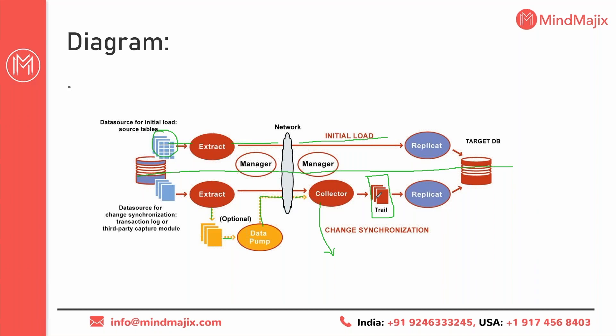The replicate process runs in the target and reads all data from the remote trail file, then applies the data to the target database. The trail files available at the source side are called local trail files, and the trail files at the target side are called remote trail files. Trail files are used to avoid data loss — even if the network goes down, the data is still available in the trail file.